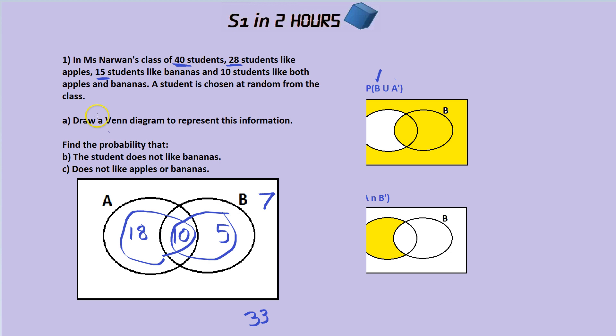Let's now answer the question. So we've answered part A by filling in the Venn diagram. Obviously, you would have to draw this in the exam. Part B is the student does not like bananas. So that means we need to count up all the students outside of the banana bubble. Because inside the banana bubble, that's liking bananas. So outside the banana bubble, we have 18 here and 7 here. That adds up to 25. So the answer for B is 25 out of 40. That's part B.